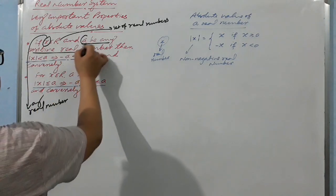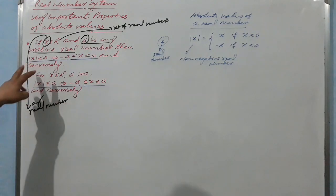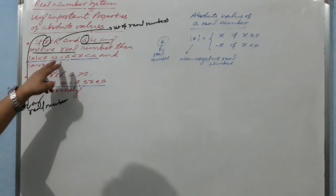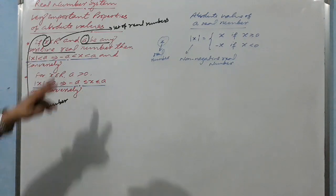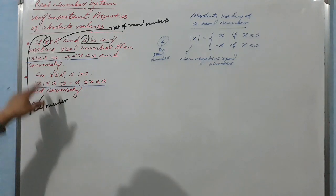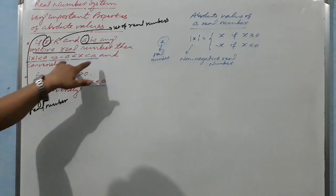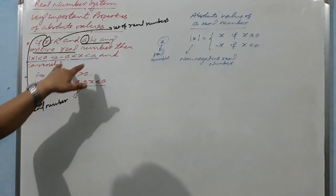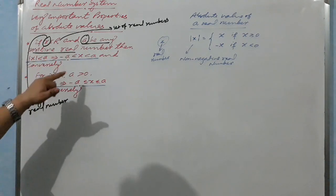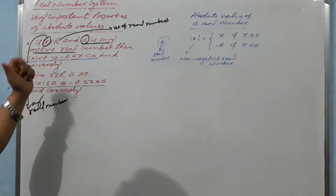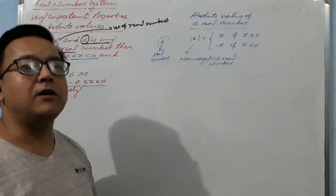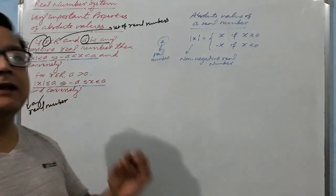Then: mod of X, that is the absolute value of X, less than 'a', implies minus a less than X less than a. And conversely, if minus a less than X less than a, then the absolute value of X is less than a.